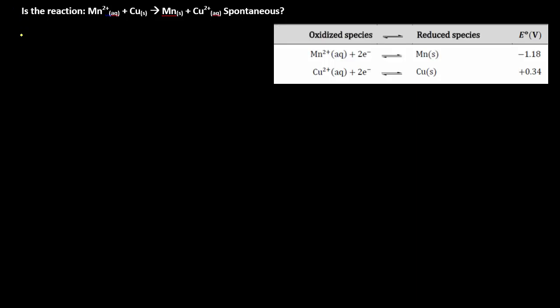How can we put this into use? Here's a sample reaction: manganese 2+ plus copper metal goes to manganese solid plus copper 2+. Is this spontaneous? Will this happen on its own?